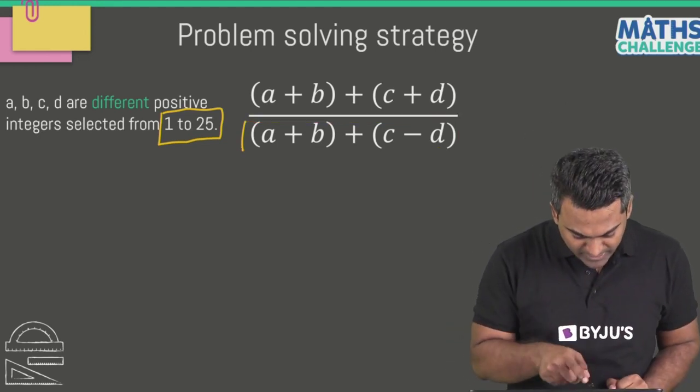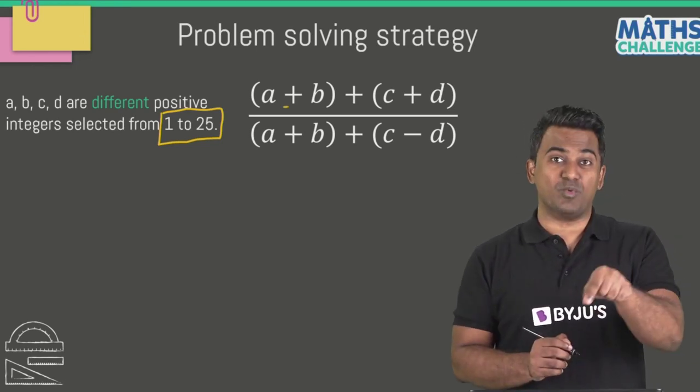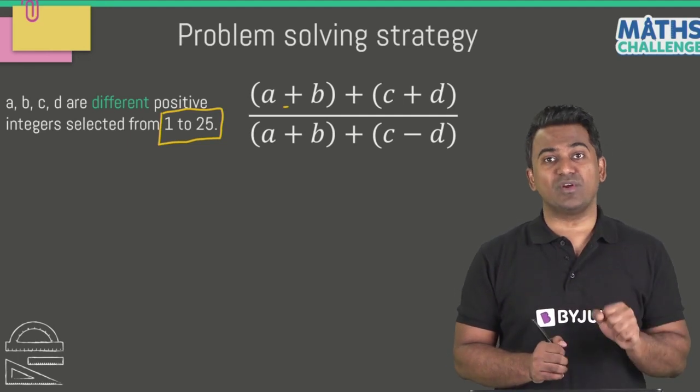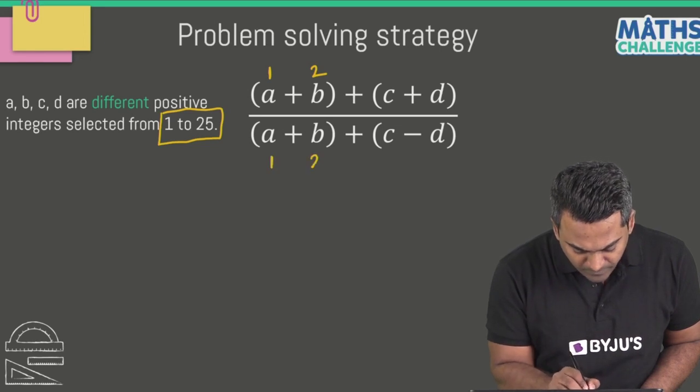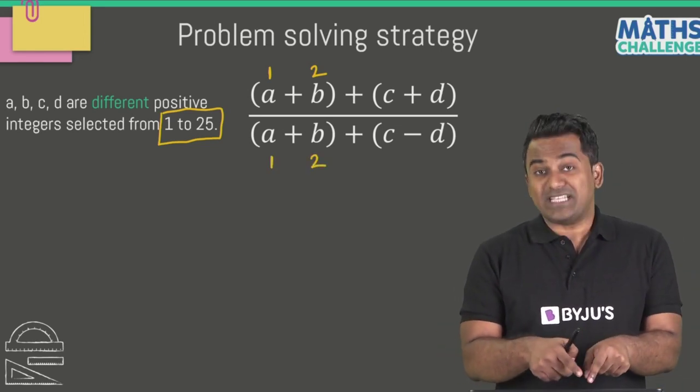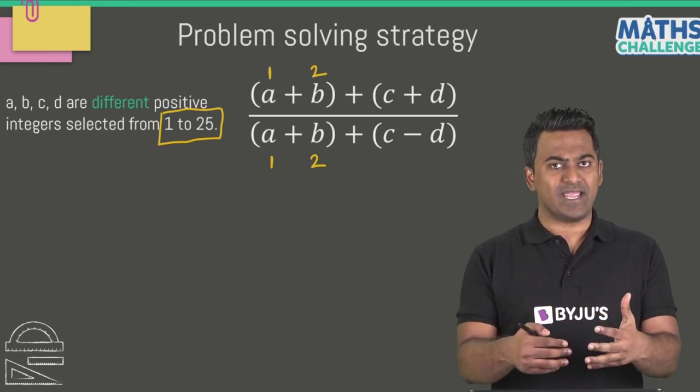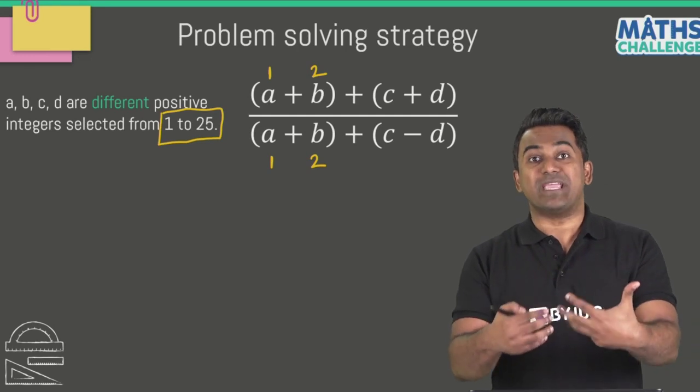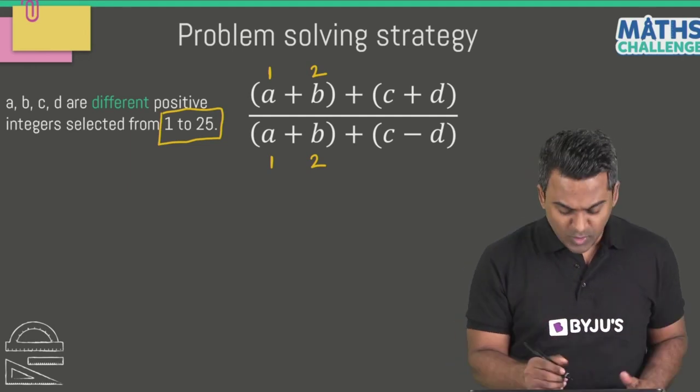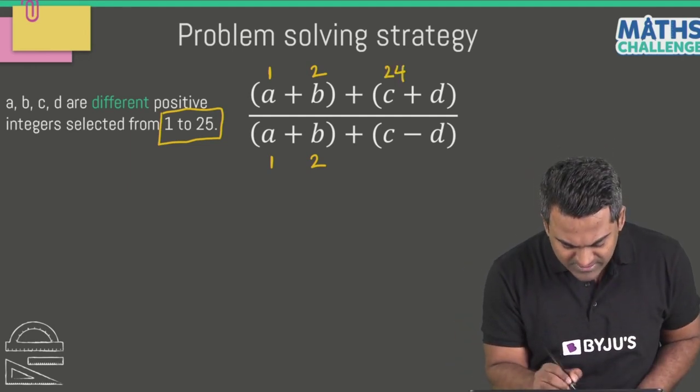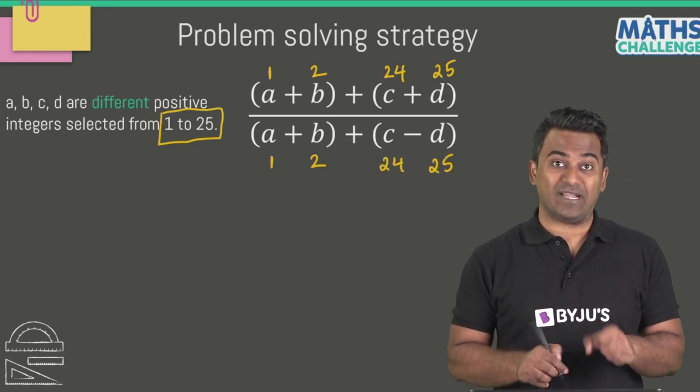Let's do a little bit of plug and play and see how the answer takes shape. First thing I would do is take A and B to be very small because A plus B is in the numerator and also in the denominator. Let's say A is 1 and B is 2. Now since in the numerator I have C plus D and in the denominator I have C minus D, I can take C and D to be as big as possible to make the numerator as big as possible and the denominator as small as possible. So can I consider C as 24 and D as 25?